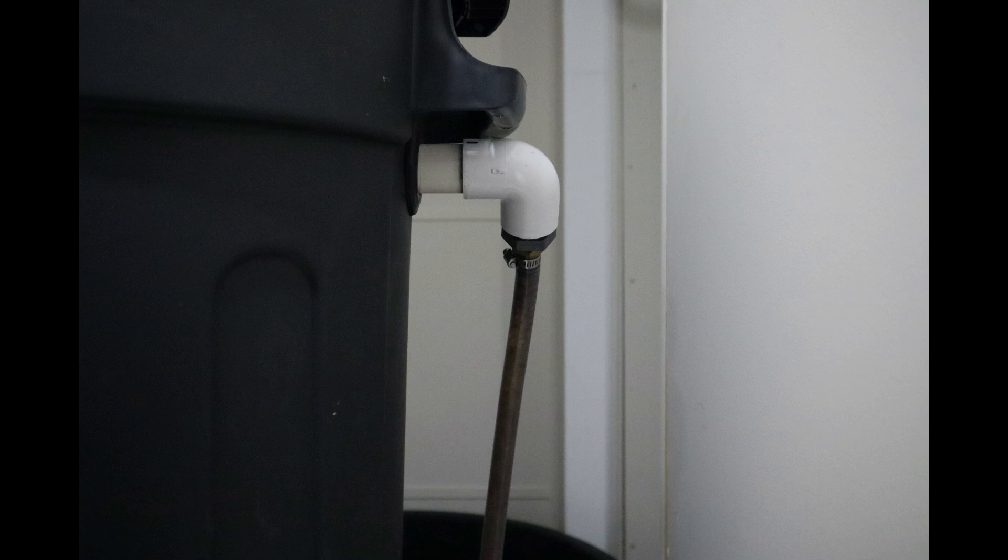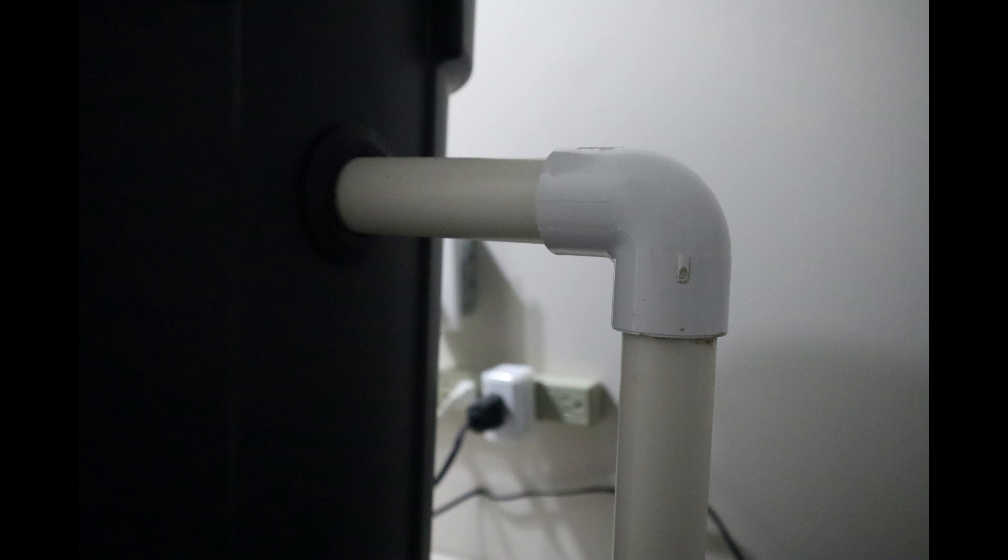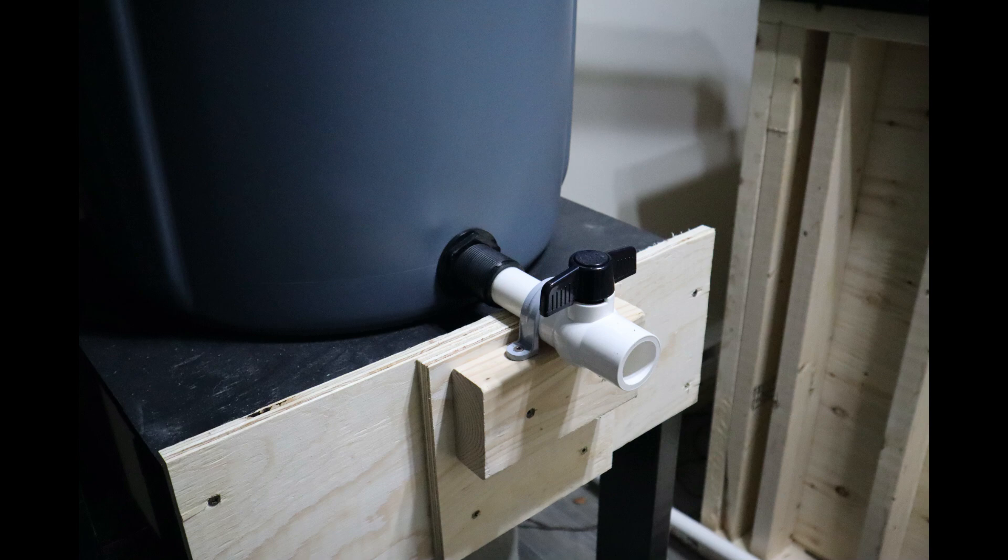The first thing I do is drill 3 holes in the garbage bin, 2 at the top where I usually use a uniseal and then at the bottom where I usually use a bulkhead. The reason for this is that the bulkhead is a lot more rigid and this bottom needs a clean out valve so that when the valve is turned on and off with a uniseal there is movement and that can cause the valve to leak.